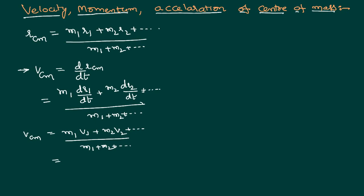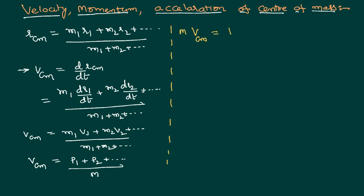If we want to express this in terms of momentum, M1V1 is the momentum of the first particle and M2V2 is the momentum of the second particle. The sum of all masses is the total mass of the system. We can rearrange to write: total mass of the system × V_CM = momentum of the first particle + momentum of the second particle + and so on. So the momentum of the center of mass equals the sum of individual momenta of all particles.